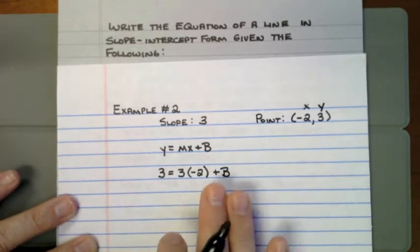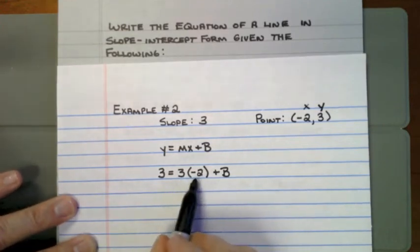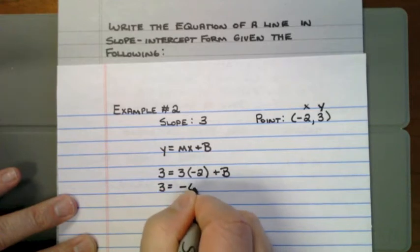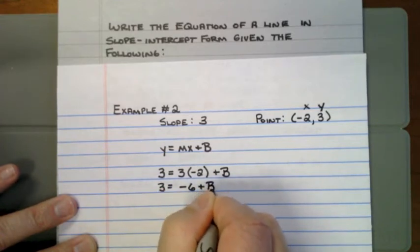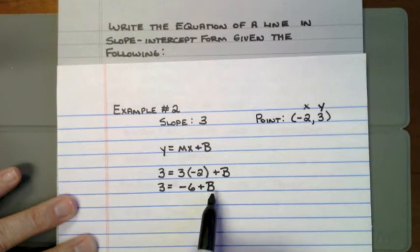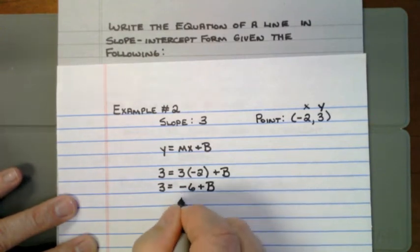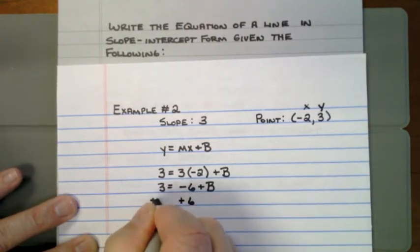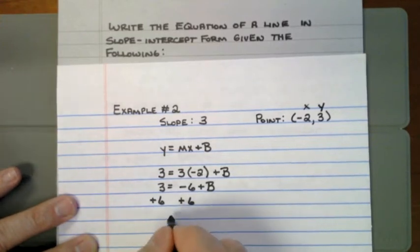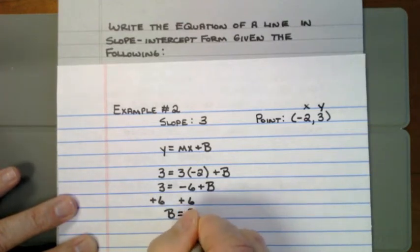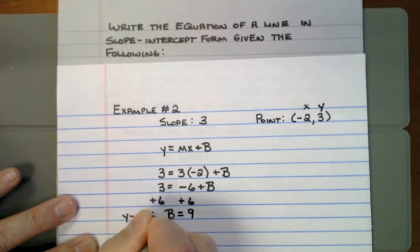b stands for the y-intercept — once I solve for it, I know what the y-intercept is. Multiplying: 3 equals 3 times negative 2, which is negative 6, plus b. To solve this one-step equation, the opposite of negative 6 is positive 6, so I add 6 to both sides. 3 plus 6 is 9. b equals 9, which is my y-intercept.